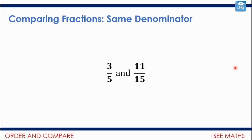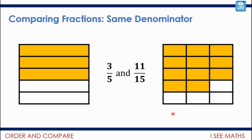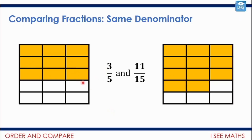Another technique is finding the same denominator. Comparing three fifths and eleven fifteenths — a picture makes it clear that eleven fifteenths is larger. What I can do is convert three fifths into fifteenths: I multiply the 5 by 3 to get 15, so I also multiply 3 by 3, giving me nine fifteenths. So three fifths equals nine fifteenths — and now I can compare: nine fifteenths versus eleven fifteenths. One technique is to multiply to make the same denominator to compare fractions.